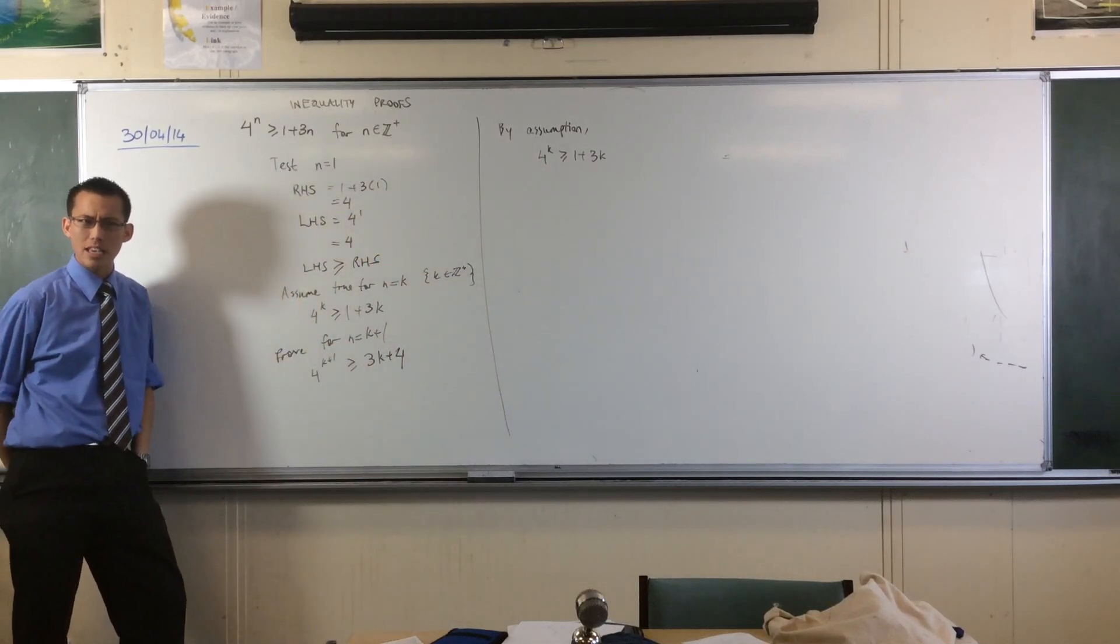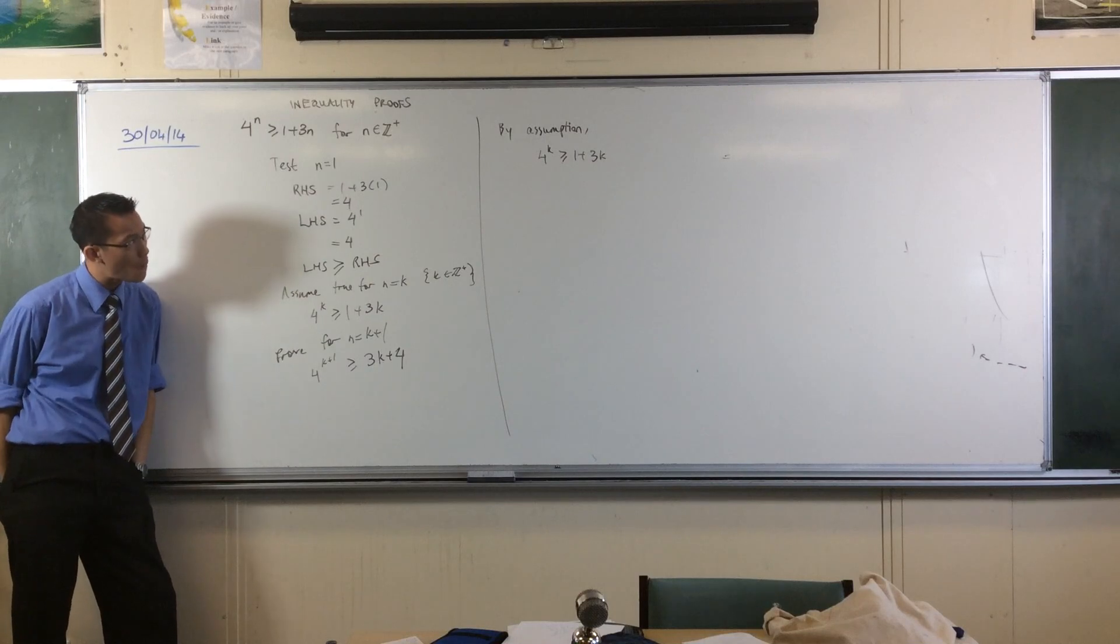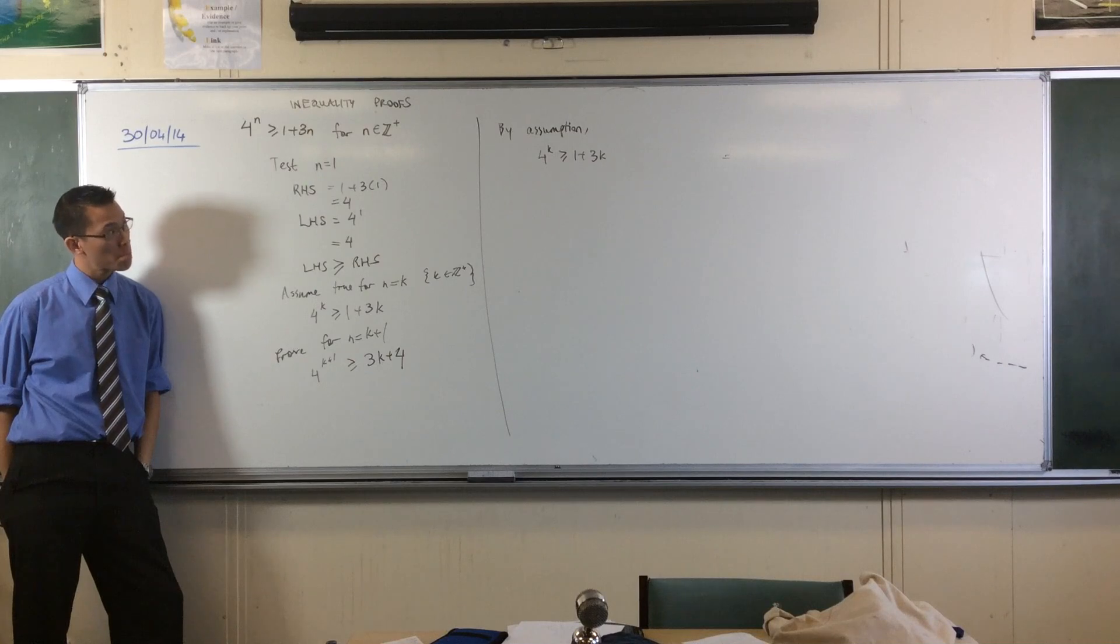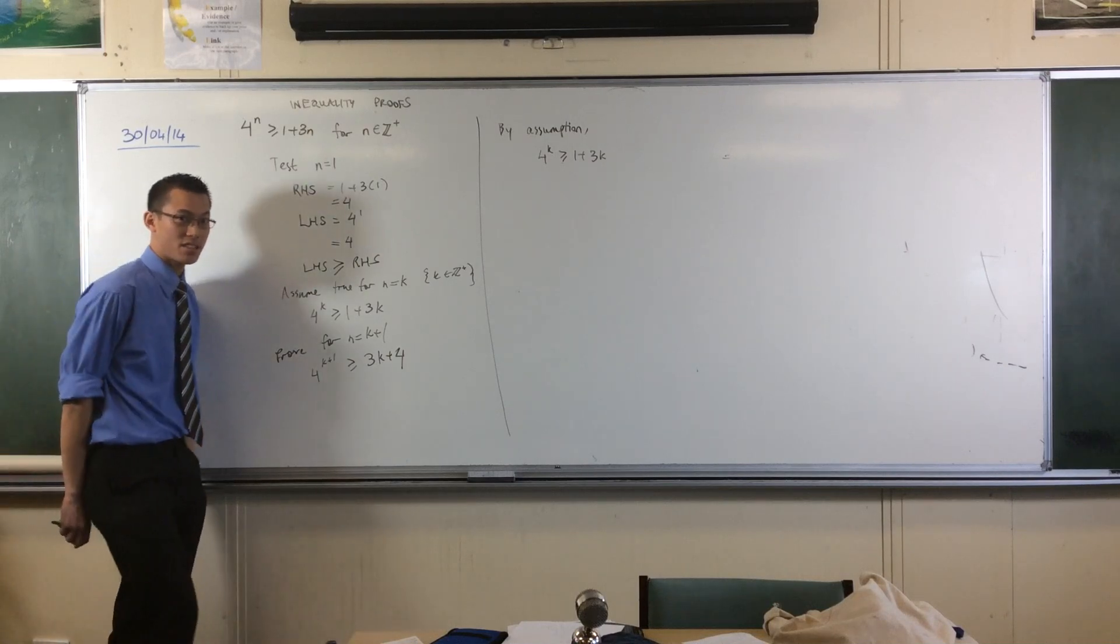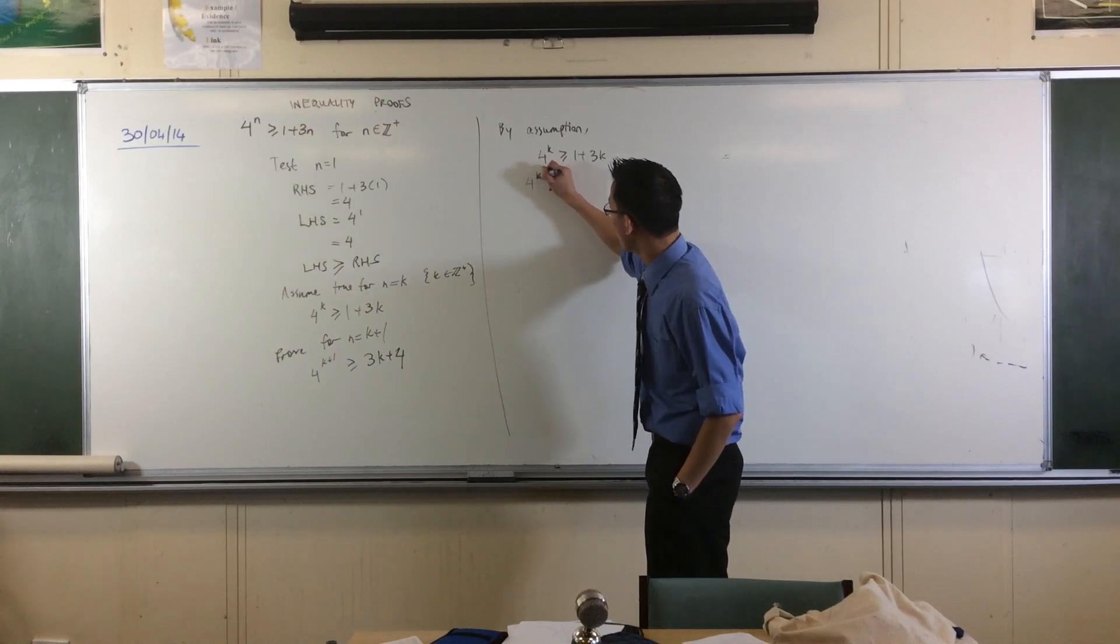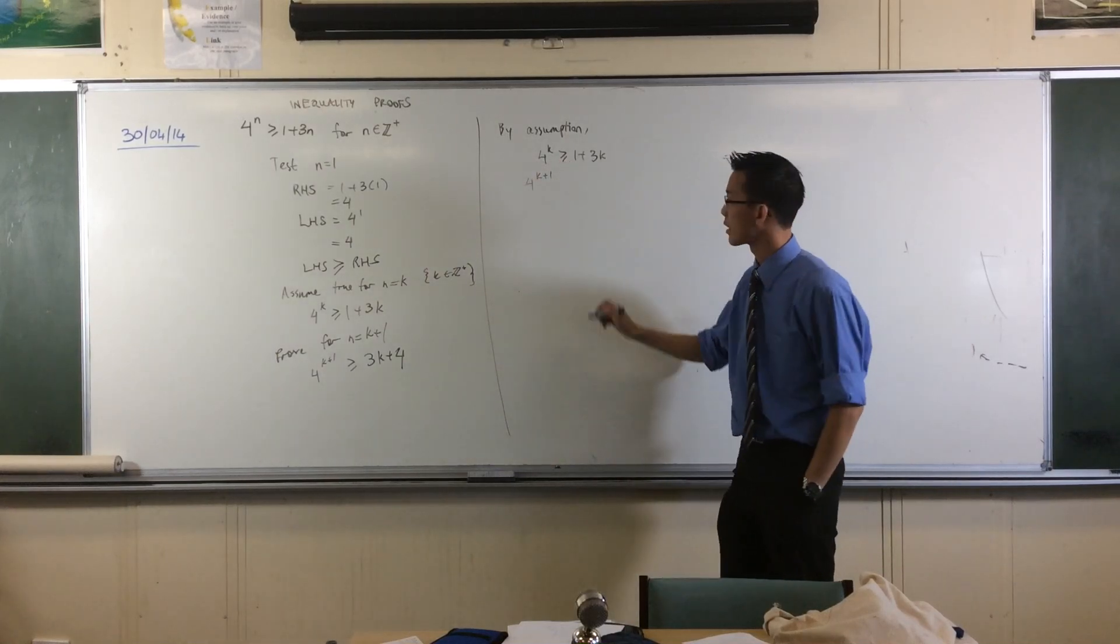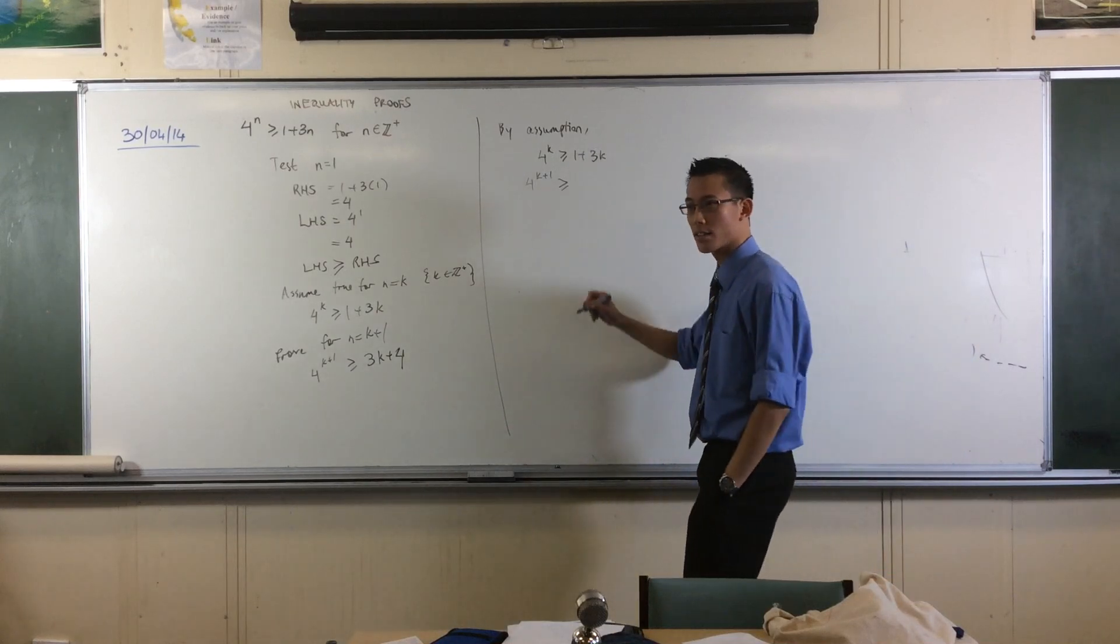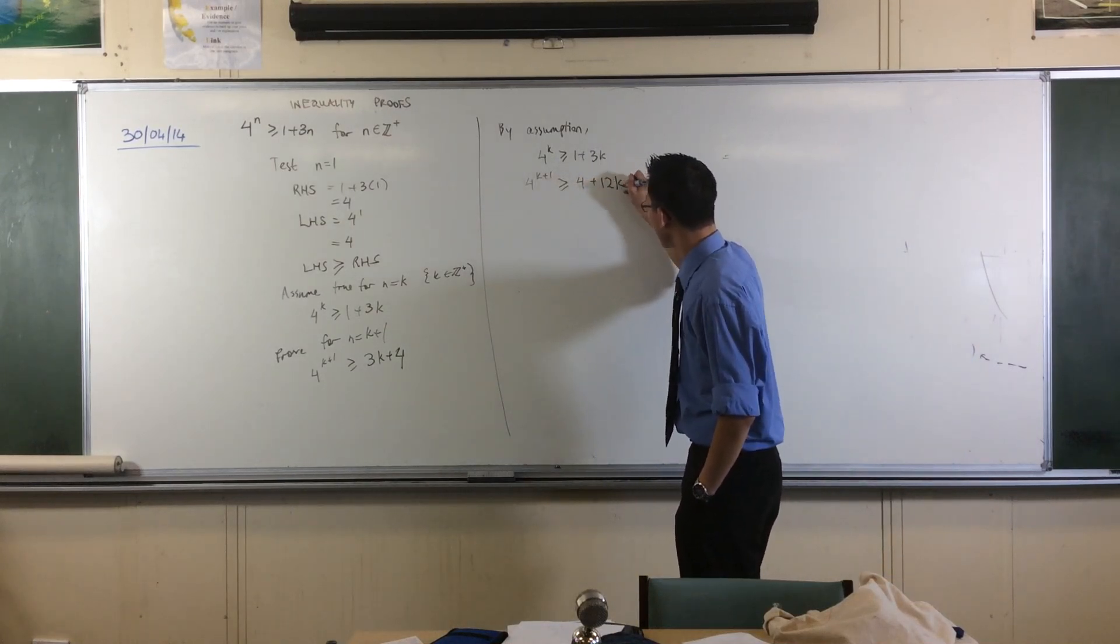Which do you think would be better? Do you think multiplying by four or do you think adding three? Well, let's test your theory, shall we? Multiply the left-hand side by four, you get 4 to the k plus 1. Sure enough. Now, on the right-hand side, you get 4 plus 12k. 4 plus 12.